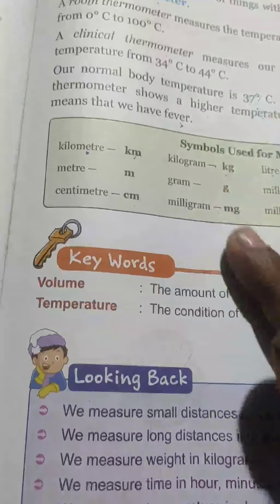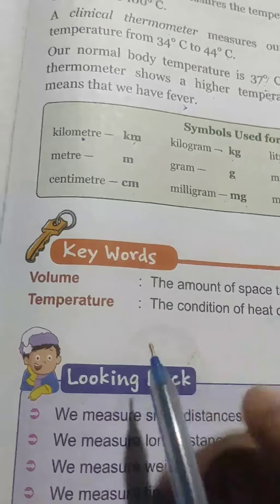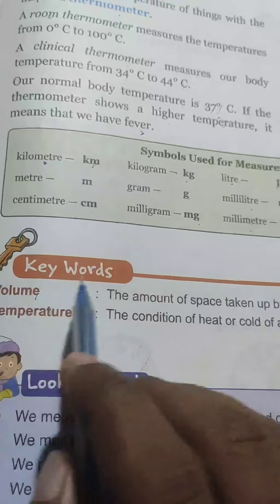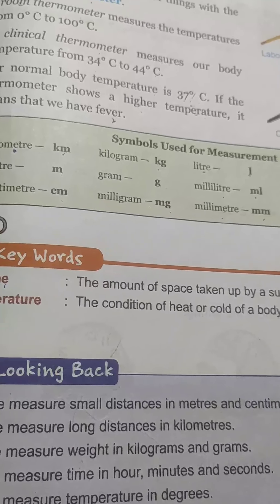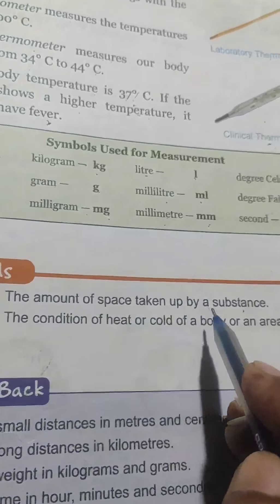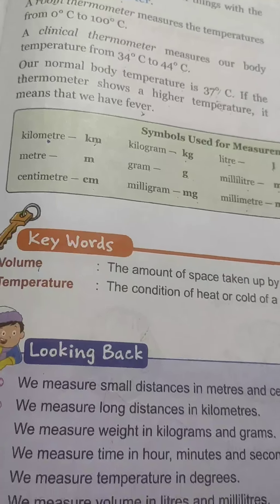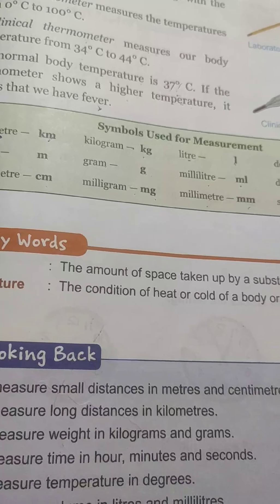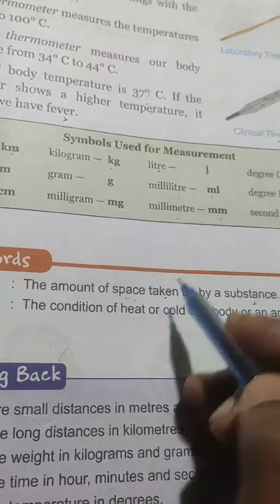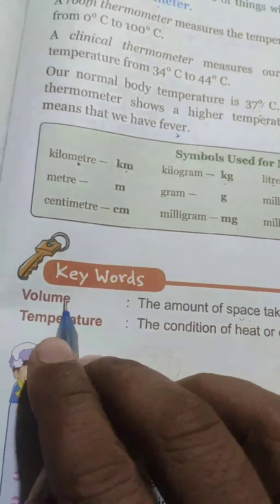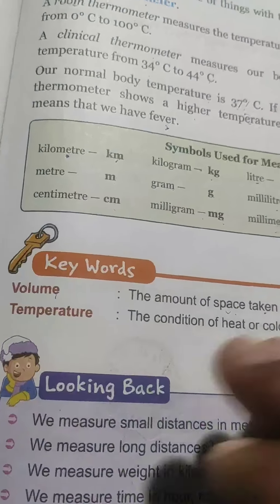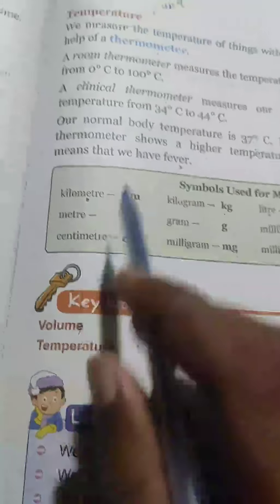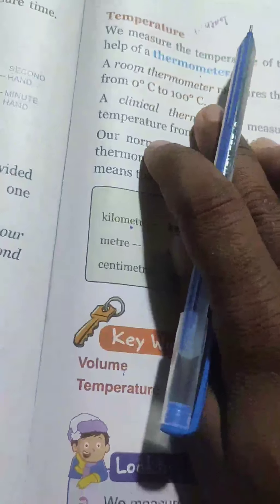तो इस तरीके से आपका chapter यहाँ पर end होता है। Keywords में — volume क्या है: the amount of space taken up by a substance. Volume मतलब आप जो amount use कर रहे हैं — अगर आप कोई water लें और उसमें कोई चीज डालें, वह space taken कर रही है, that is volume। Temperature: the condition of heat or cold of a body or an area.